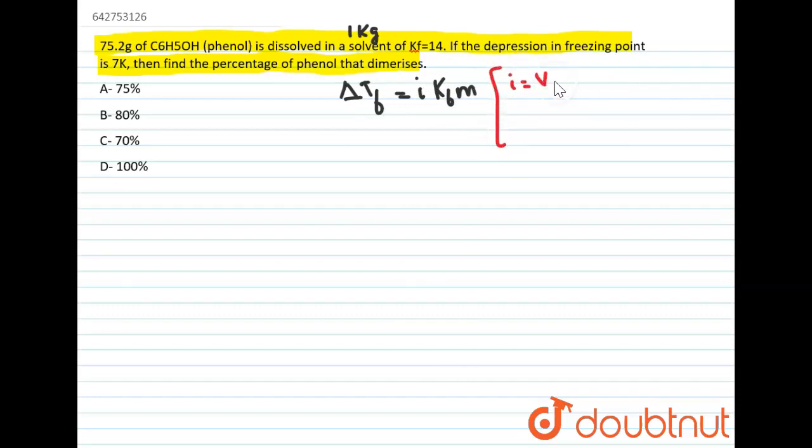So i here is the vanthoff factor, m is the molality of the solution, and Kf is called as molal depression constant or cryoscopic constant, the value of which is given to us in this question as 14.